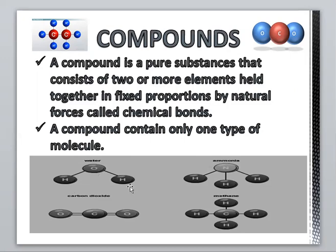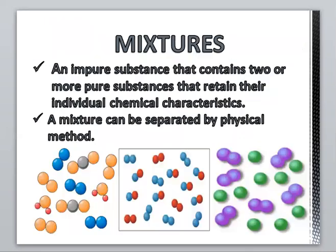All water molecules have one oxygen and two hydrogen atoms. All ammonia molecules have one nitrogen and three hydrogen atoms. Carbon dioxide molecules have one carbon and two oxygen atoms. Methane molecules have one carbon and four hydrogen atoms. This means compounds are fixed in proportion — their elements are fixed in number.